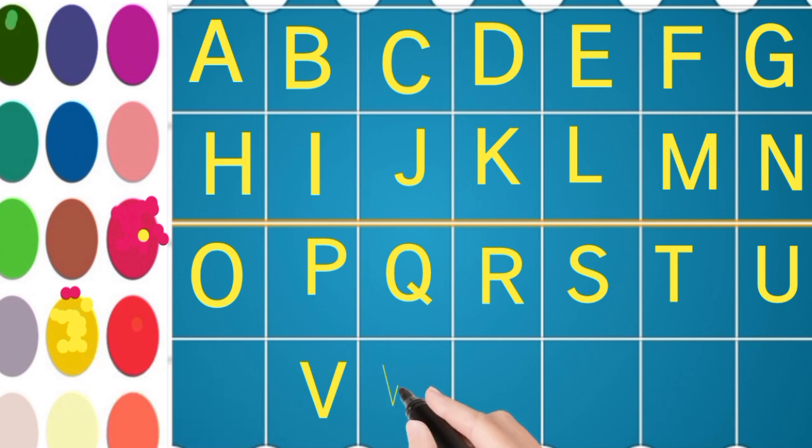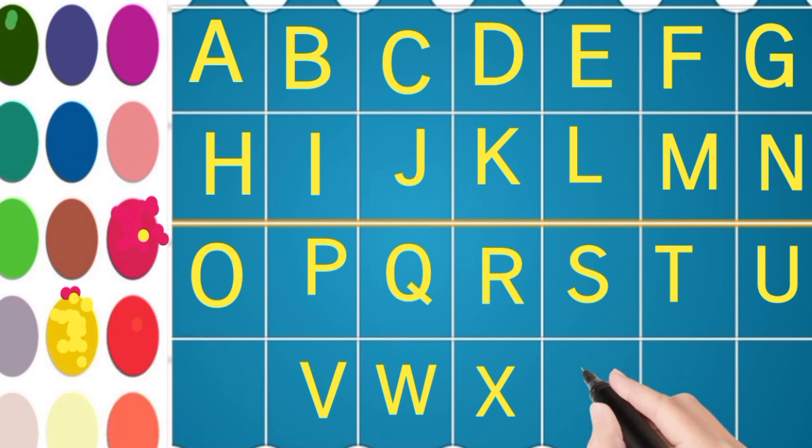V. V for vulture. W. W for vase. X. X for christmas tree. Y for yolk.